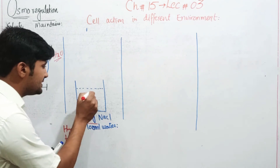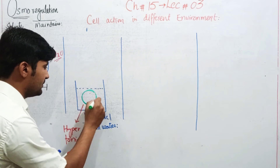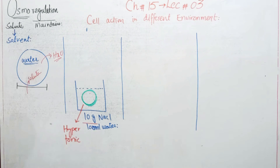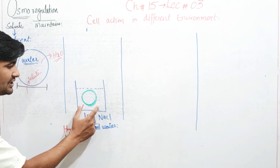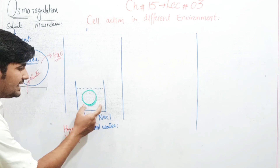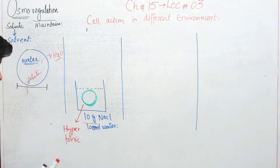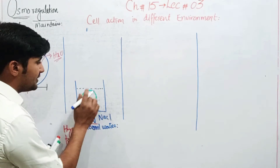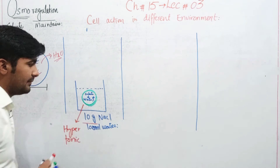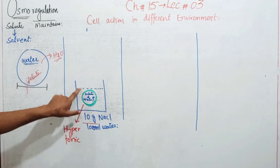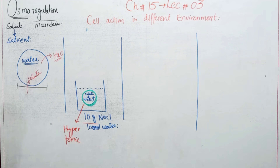اب اس بیکر کے اندر cell رکھ دیتا ہوں۔ جب یہ cell اس کے اندر place کیا تو باہر جو ہے وہ solute کی concentration زیادہ ہے، water کی concentration کم ہے۔ Cell کے اندر solute کم ہیں اور water زیادہ ہے - cell کے اندر water کی concentration زیادہ ہے as compared to environment۔ تو یہ جو situation کہلاتی ہے یہ کہلاتی ہے hypertonic environment۔